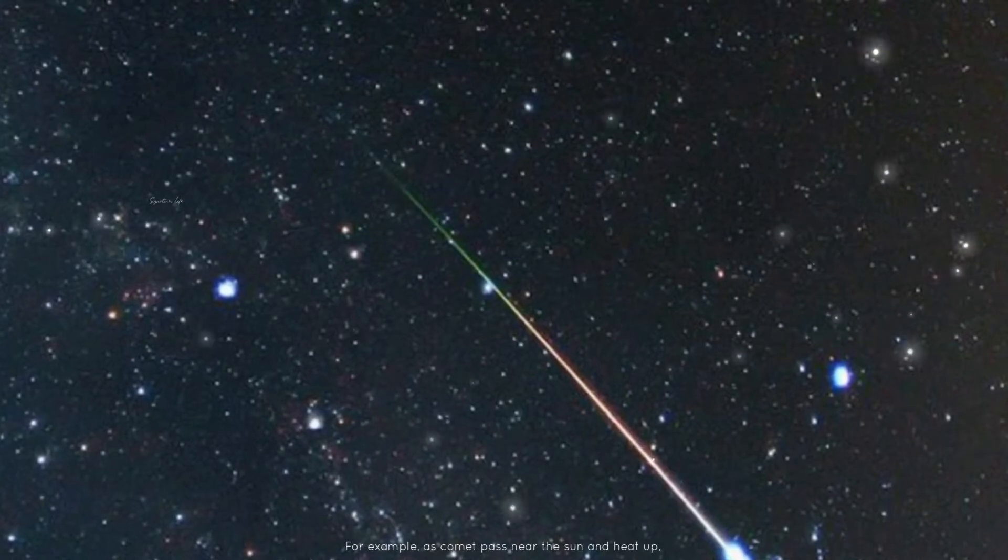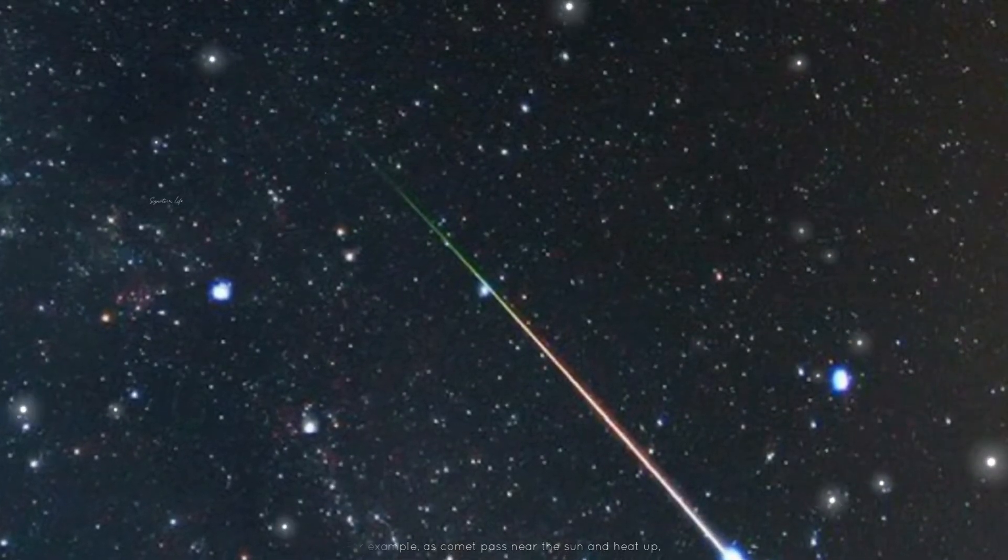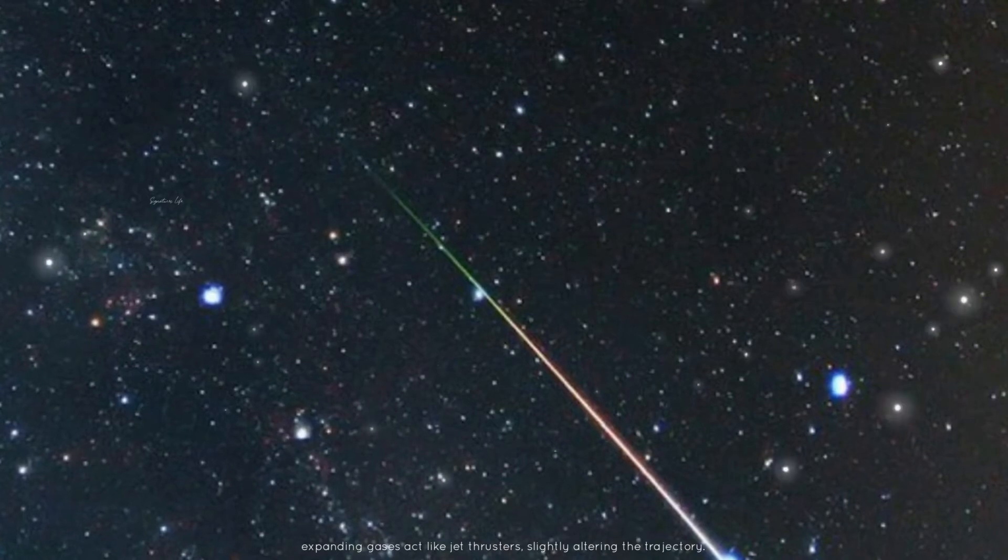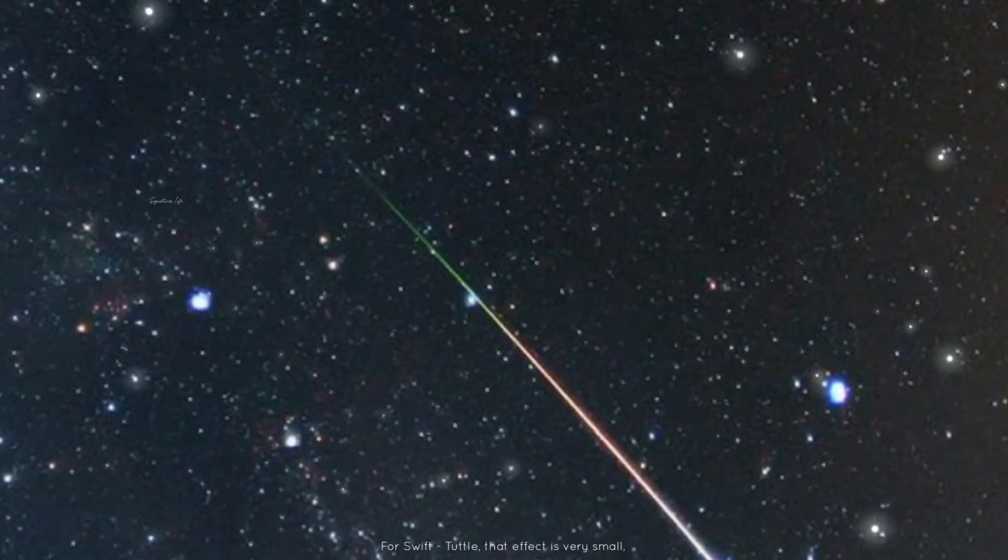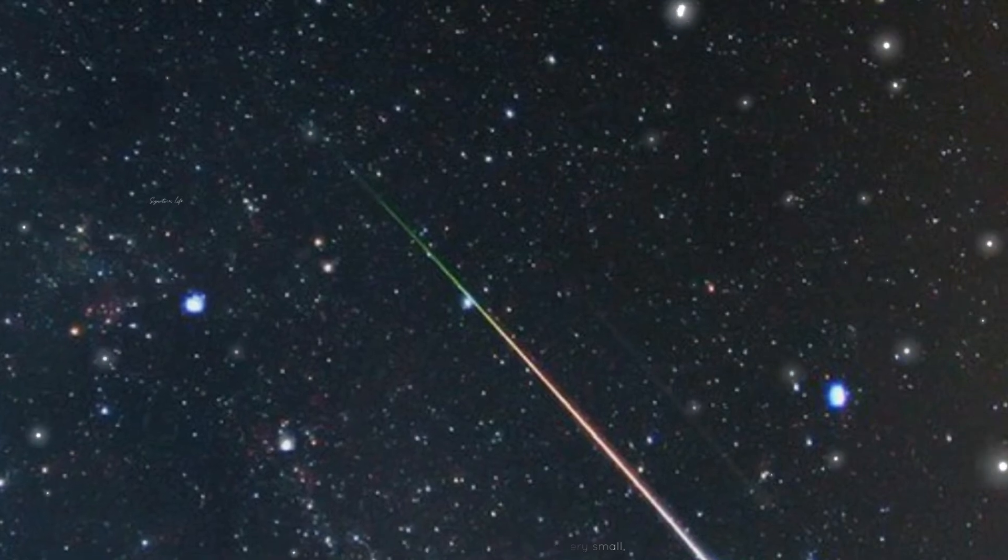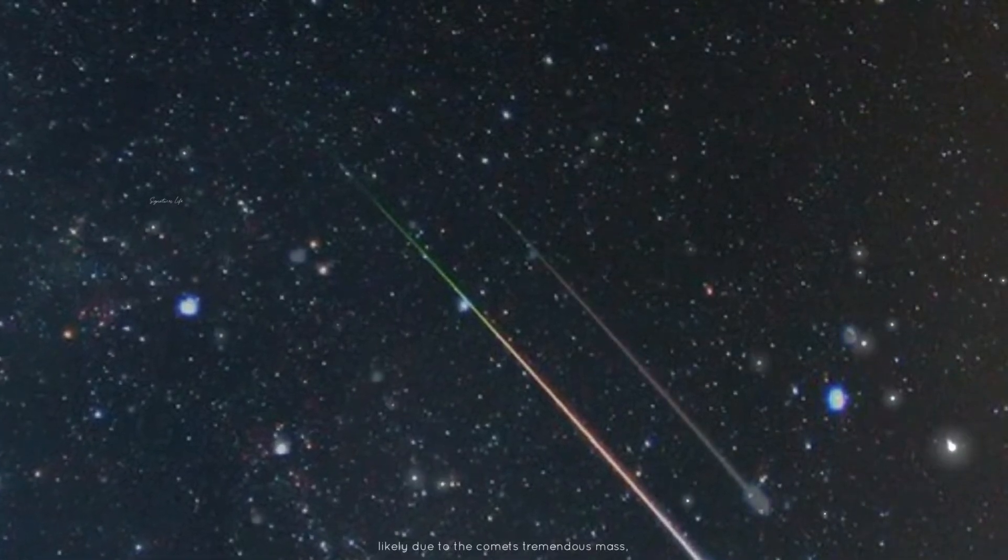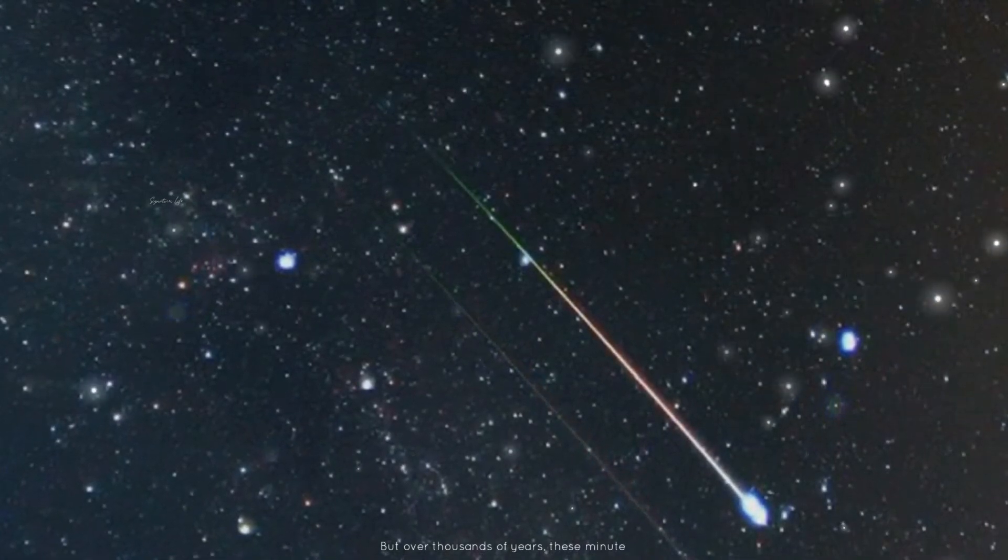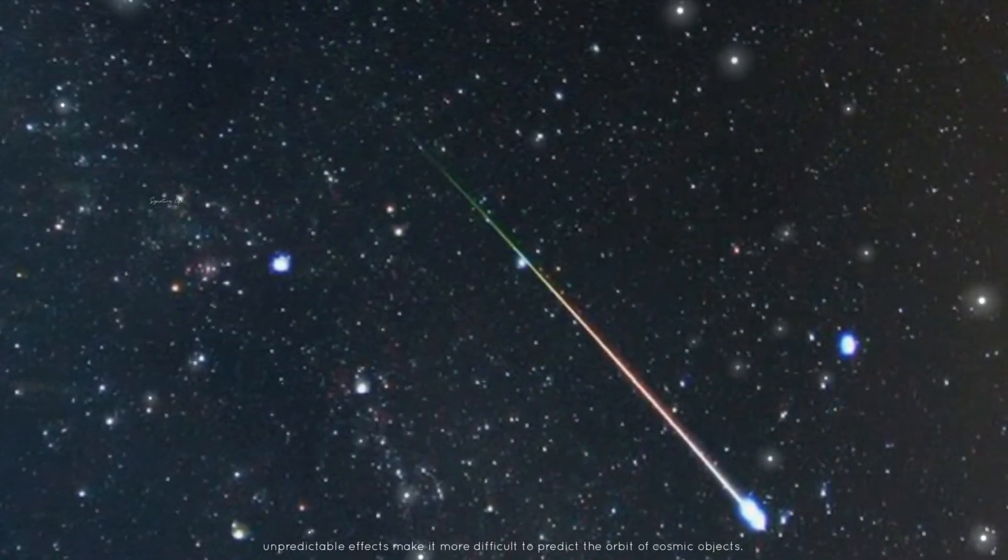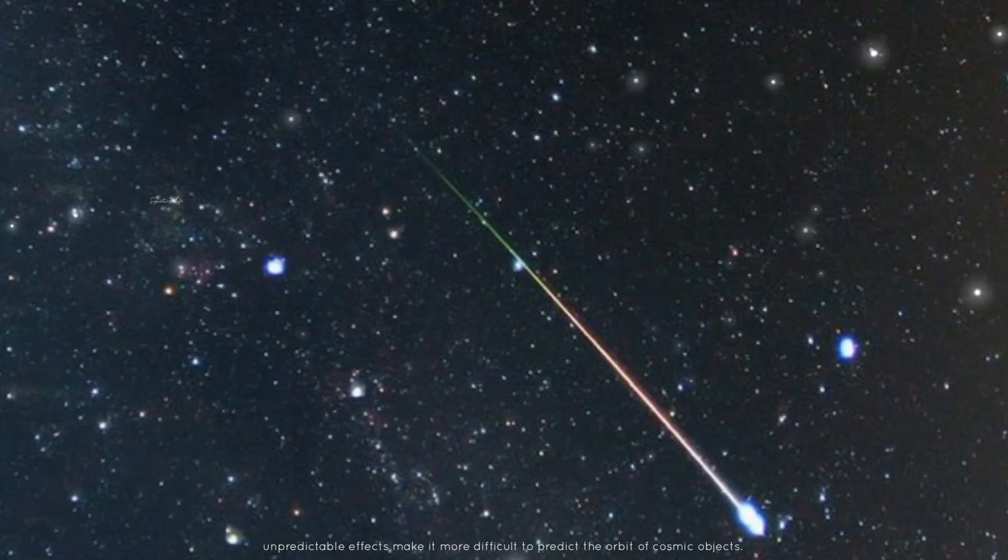For example, as comets pass near the Sun and heat up, expanding gases act like jet thrusters, slightly altering the trajectory. For Swift-Tuttle, that effect is very small, likely due to the comet's tremendous mass. But over thousands of years, these minute, unpredictable effects make it more difficult to predict the orbit of cosmic objects.